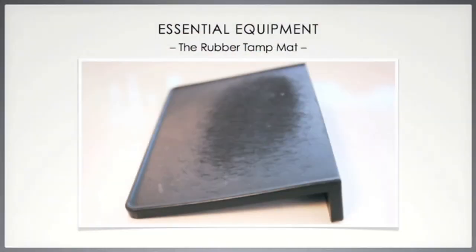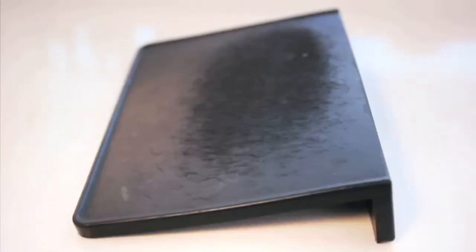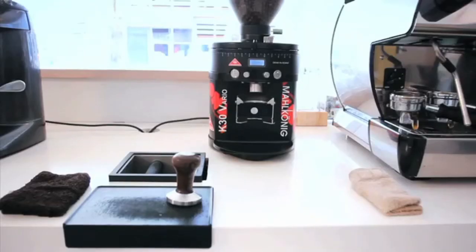The rubber tamp mat: this mat is a small rubber mat that is used to rest and support the portafilter when tamping, as well as protect your counter and provide a quiet non-slip tamping surface.